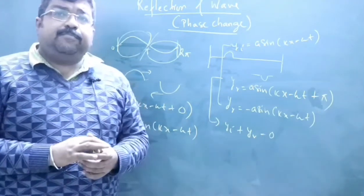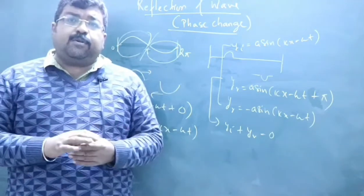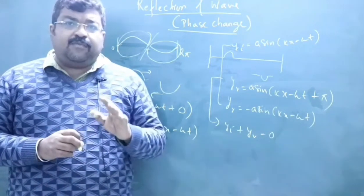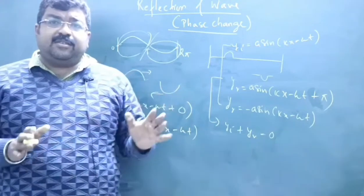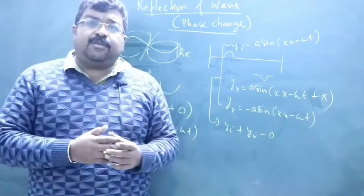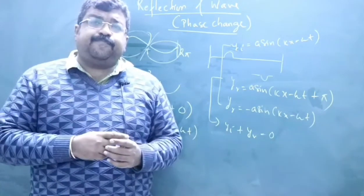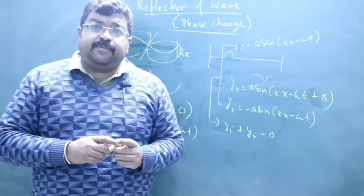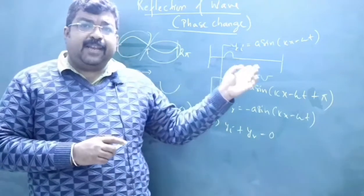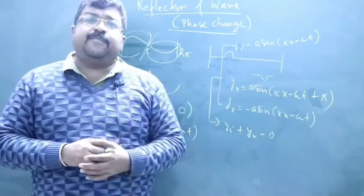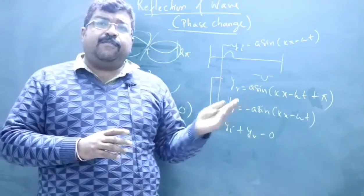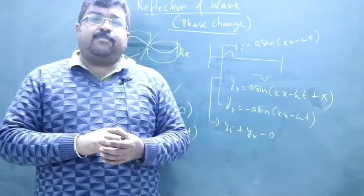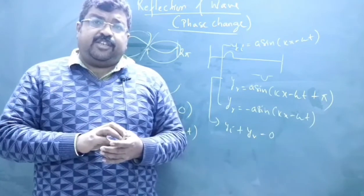This is with regard to mechanical waves, but please note that this property is also exhibited by light waves. When light undergoes reflection — this is additional information for Class 12 — if light reflects from a denser medium, the phase changes by pi, just as in the case of a mechanical wave reflecting from a rigid end. For light reflecting from a rarer medium, there is no phase change.